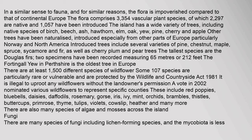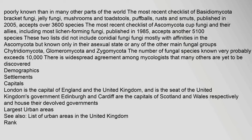Fungi: There are many species of fungi including lichen-forming species, and the mycobiota is less poorly known than in many other parts of the world. The most recent checklist of Basidiomycota — bracket fungi, jelly fungi, mushrooms and toadstools, puffballs, rusts and smuts — published in 2005, accepts over 3,600 species. The most recent checklist of Ascomycota — cup fungi and their allies, including most lichen-forming fungi — published in 1985, accepts another 5,100 species. The number of fungal species known very probably exceeds 10,000.